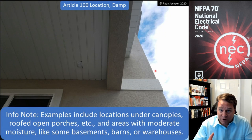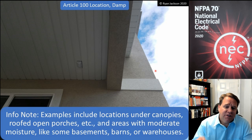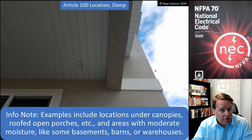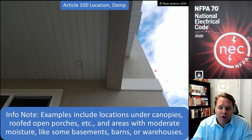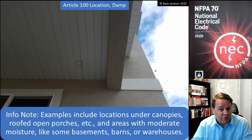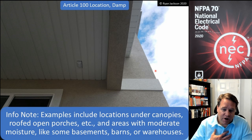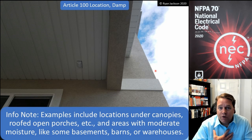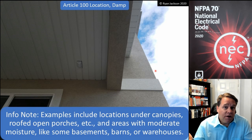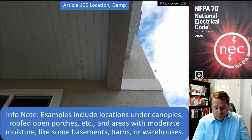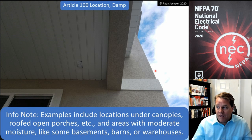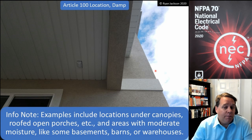There's an informational note that says examples include locations underneath a canopy or roofed open porches, and areas with moderate moisture like some basements, barns, or warehouses. I live in a desert and I've never seen a basement I'd consider a damp location, but if your basement has a dirt floor and you're in a humid environment, the entire basement might be a damp location.